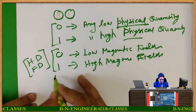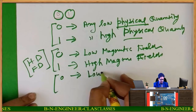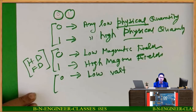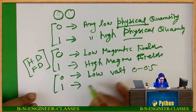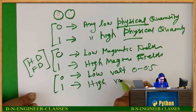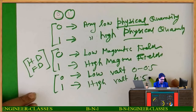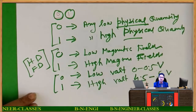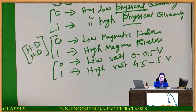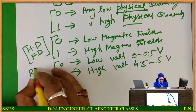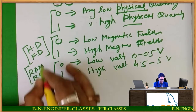Now, 0 is low voltage like 0 to 0.5 volts, and 1 is high voltage like 4.5 to 5 volts — this is what we are using. At what place? Like RAM, ROM, etc. In that case we are using this type of interpretation of 0 and 1.